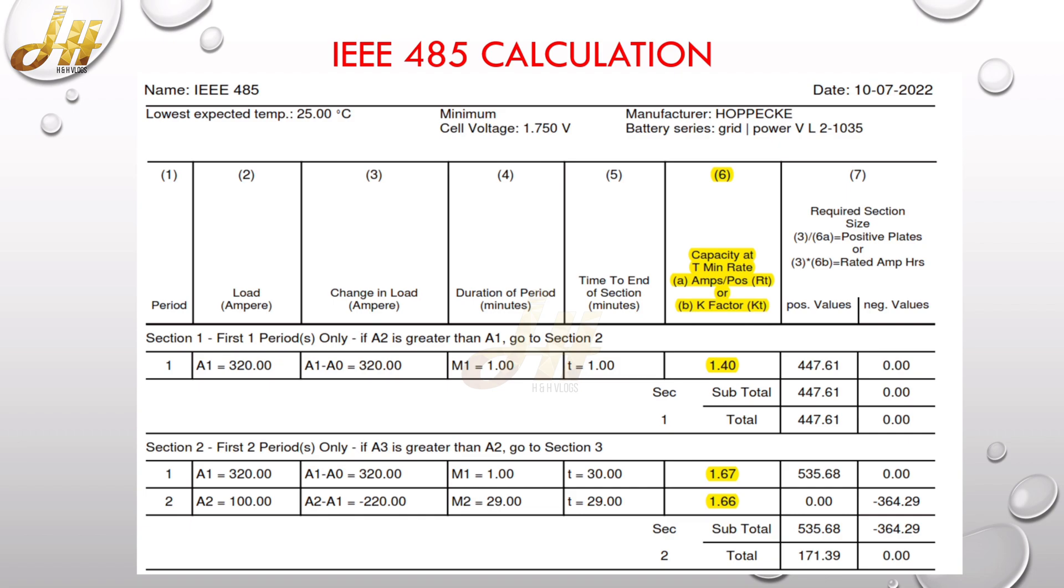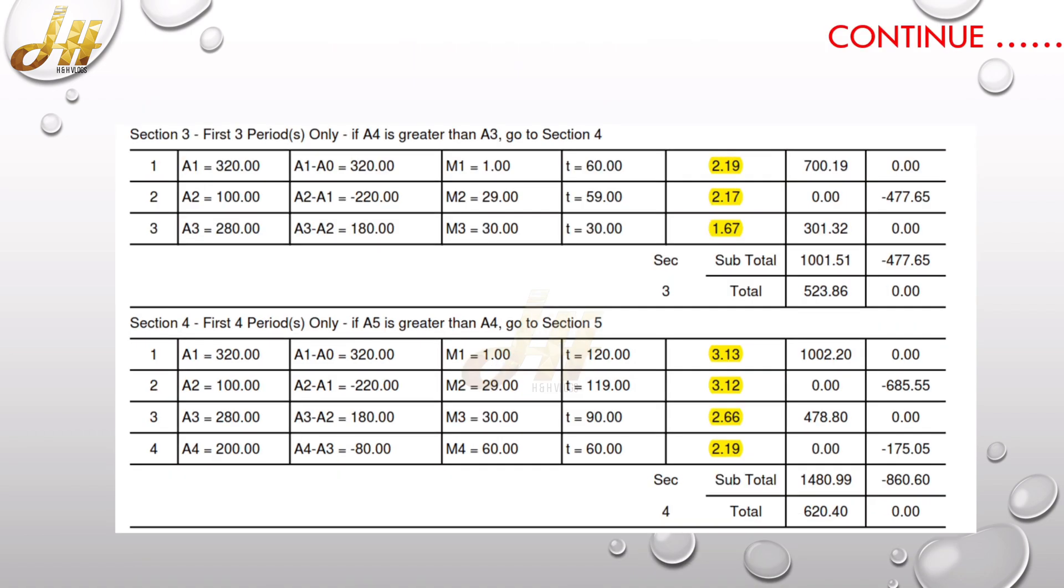Which has been highlighted in the sixth column. Now you can see the first period, which is A1 to 320 ampere, which has been for one minute, has been multiplied with the KT factor value 1.40, so you got 447.61. Similarly, for 29 and 13 minute, the KT factor values are 1.66 and 1.67.